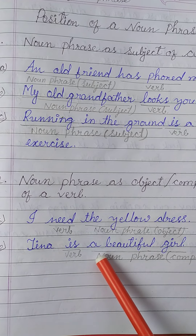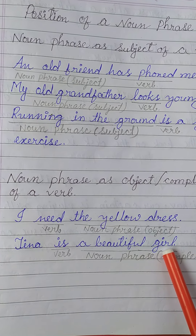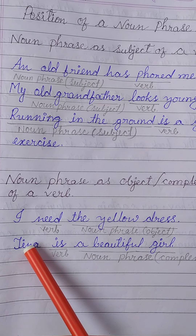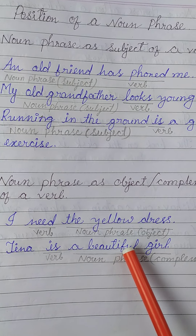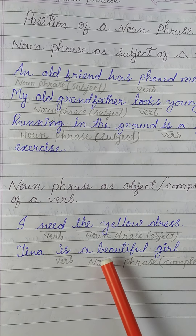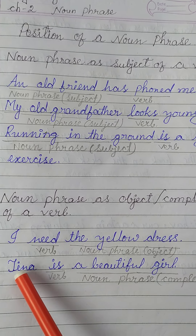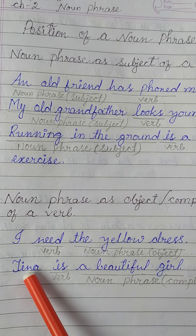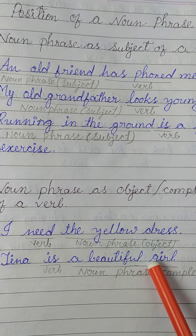Example B: 'Tina is a beautiful girl.' In this sentence, 'Tina' is the subject, 'is' is the verb, and 'a beautiful girl' is the part after the verb. Who is the beautiful girl? Tina is the beautiful girl — so 'a beautiful girl' means Tina, and Tina means 'a beautiful girl'. The subject and the part after the verb are similar, so this group of words is called the complement.